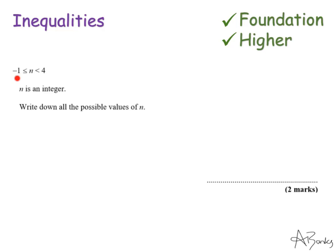We have to pay attention to what symbols they've used. This one means greater than or equal to because it's got a line underneath it, whereas this one just means less than. The important thing to note is that n can be minus one because of that line underneath the inequality symbol, but because this one doesn't have a line underneath, n can't be equal to four.